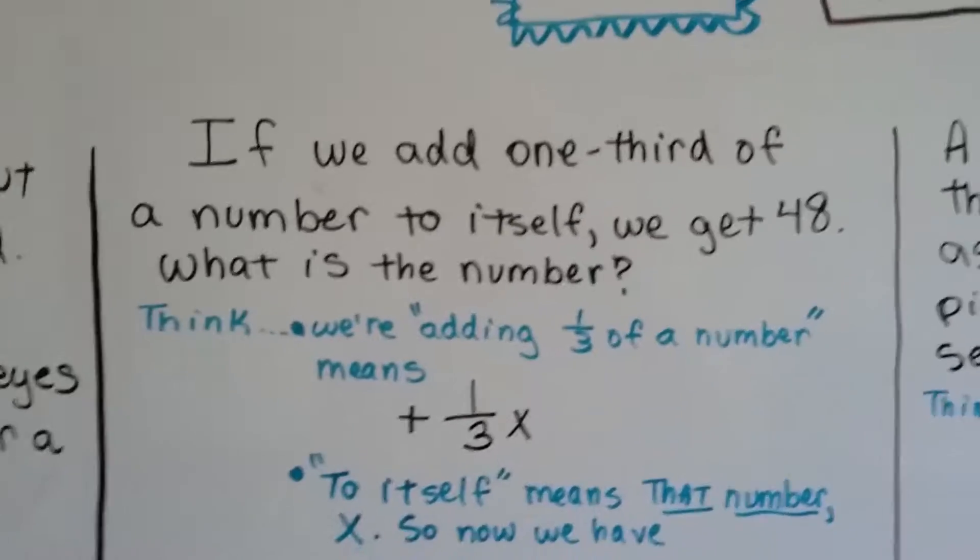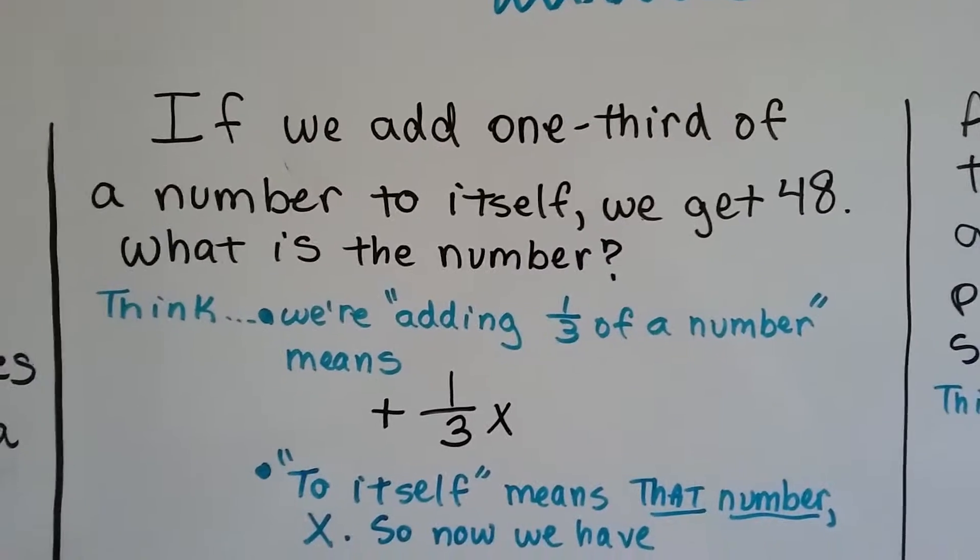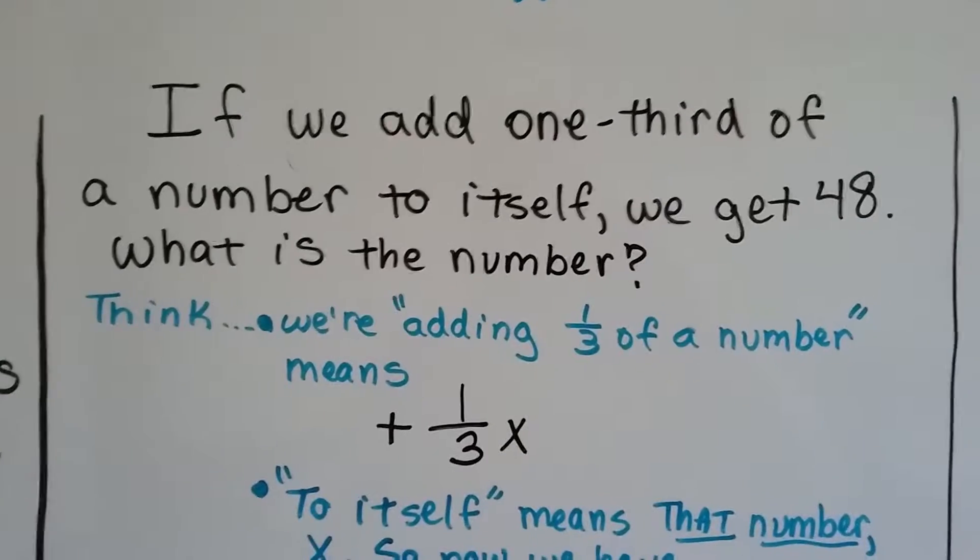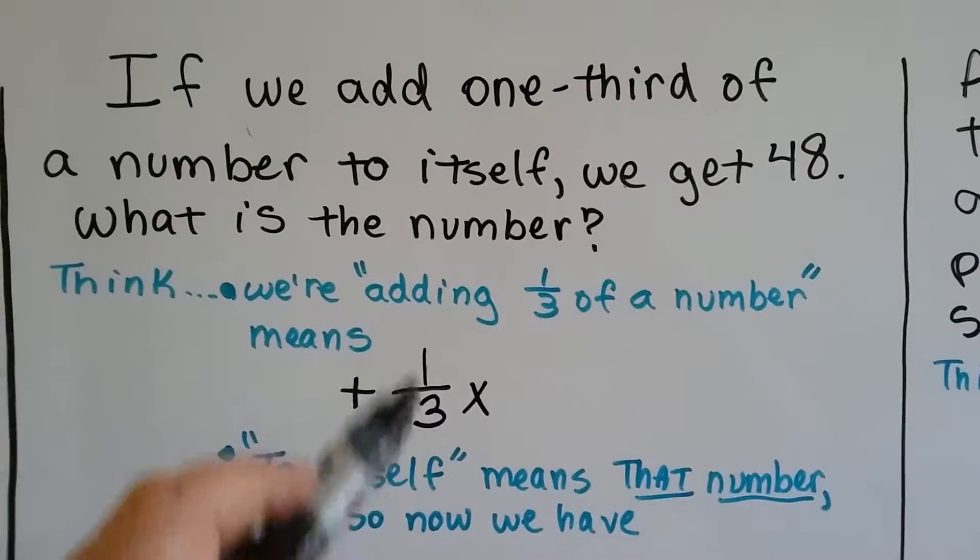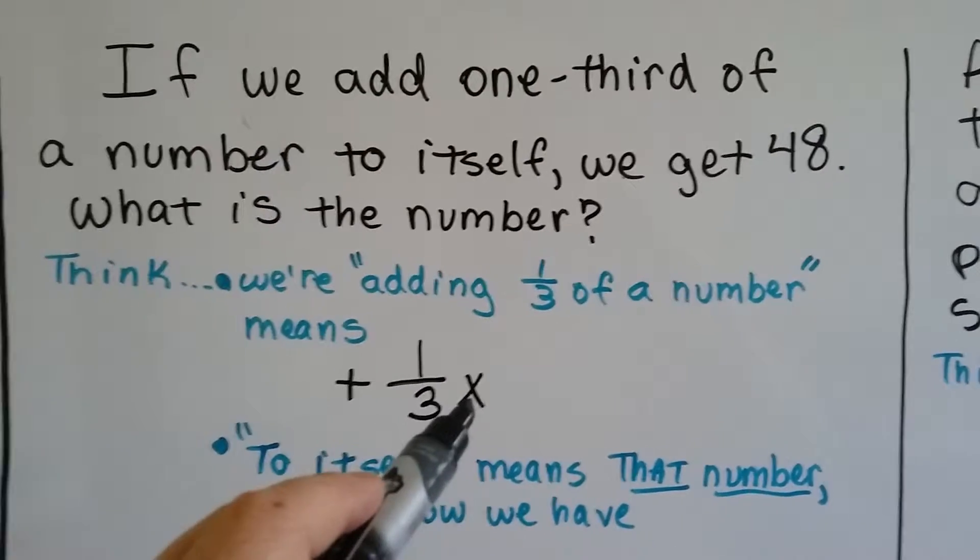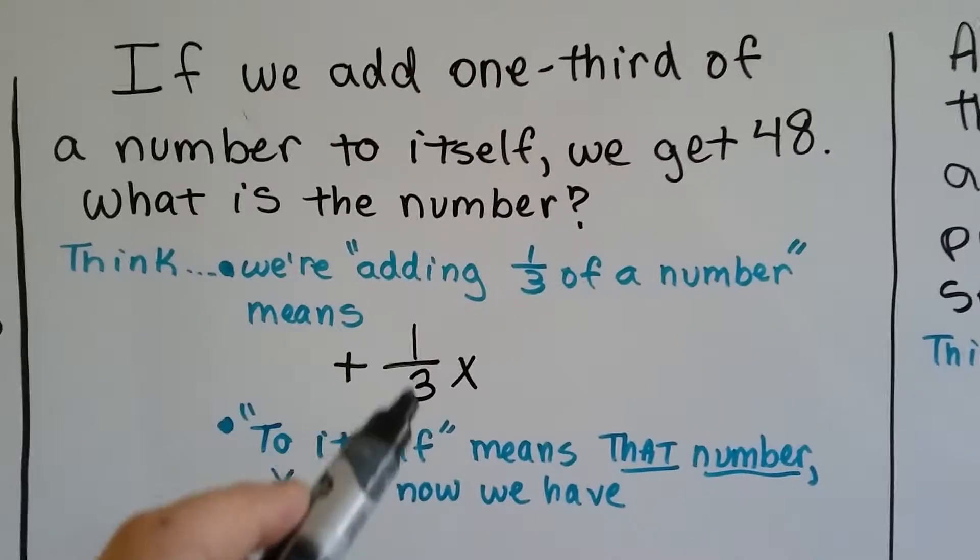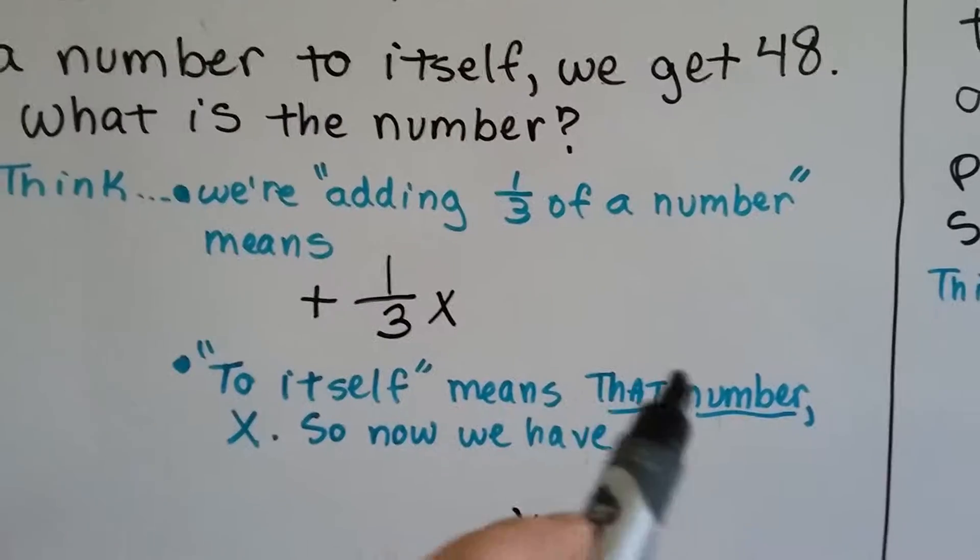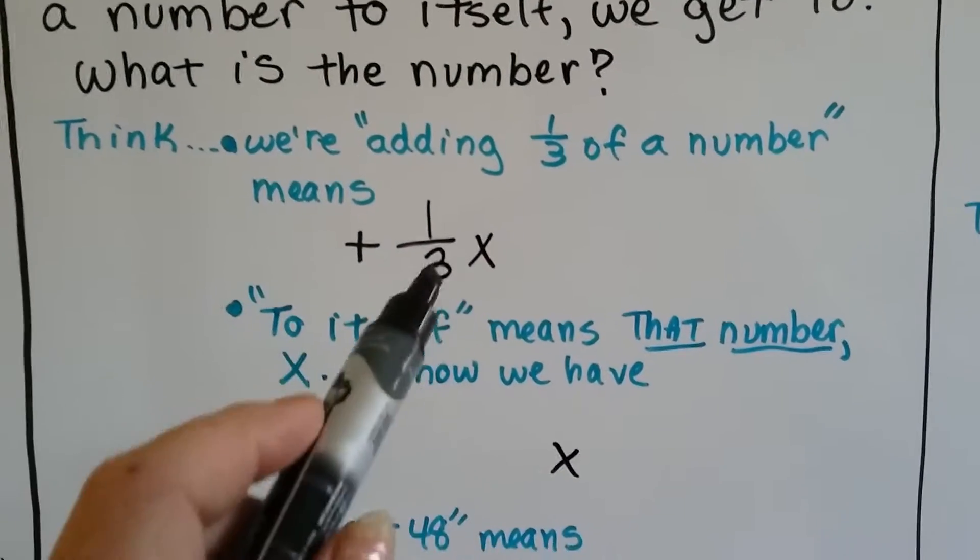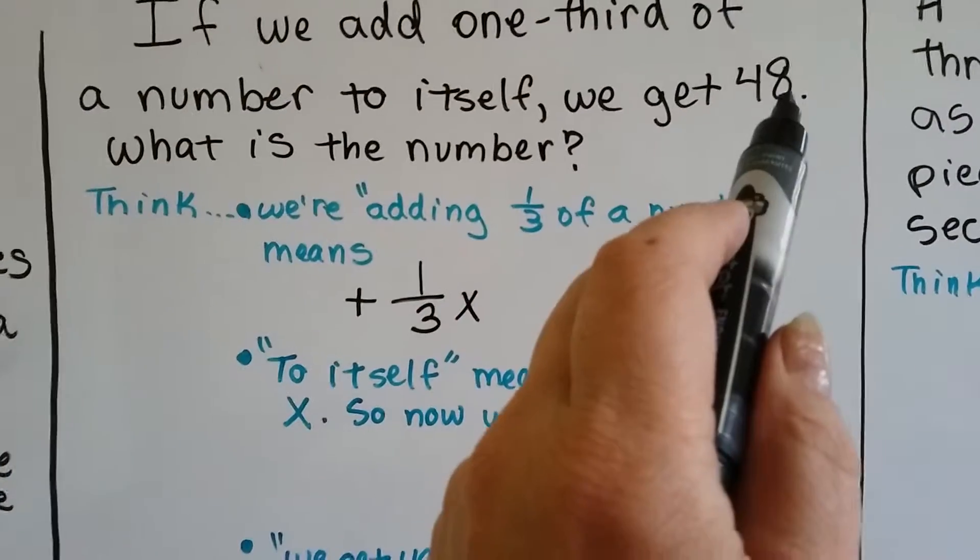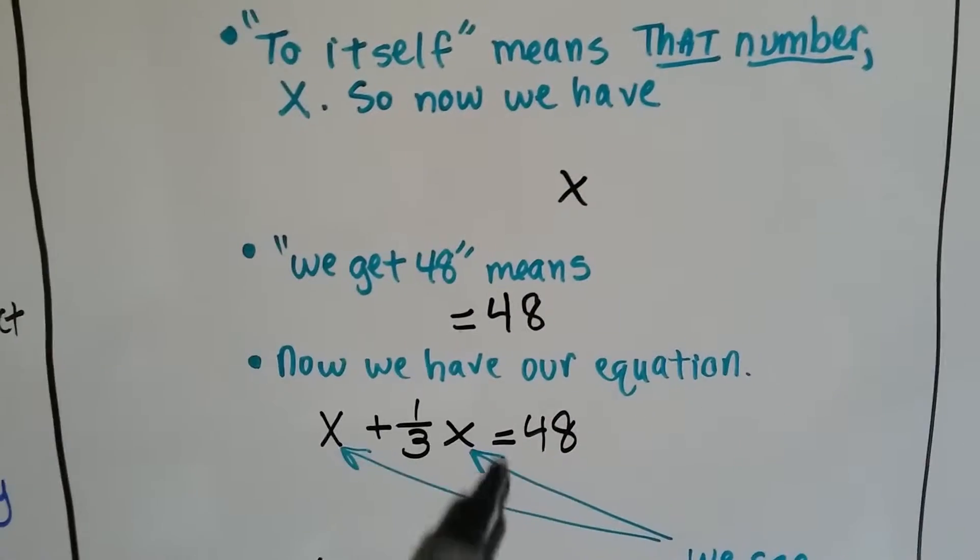Here's our problem: If we add one-third of a number to itself, we get 48. What is the number? We need to write an equation. We're adding one-third of a number, which means plus one-third x. To itself means to that number, so we have x. Now we're adding x to one-third x. And it says we get 48, so that means it equals 48. Now we have our equation: x plus one-third x equals 48.